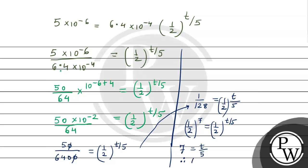Therefore t is equal to 7 into 5, that is equal to 35. So the answer is 35 days.